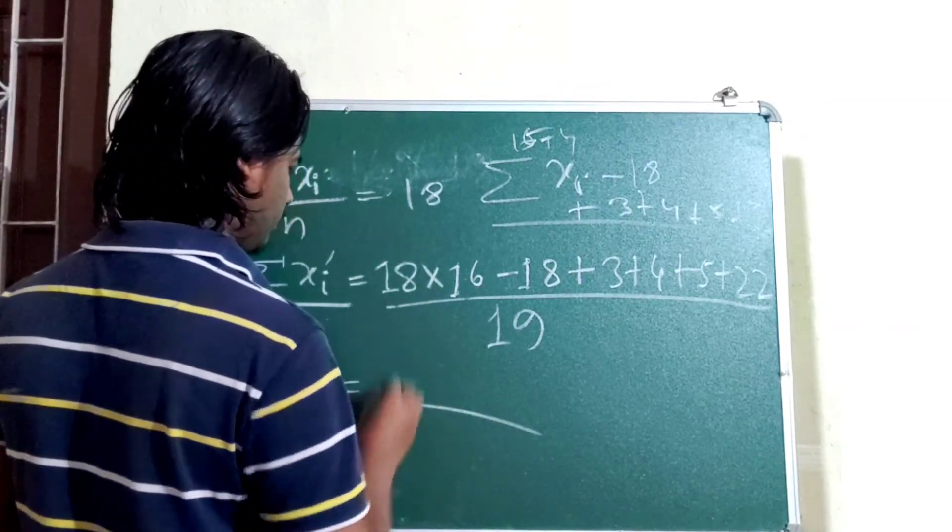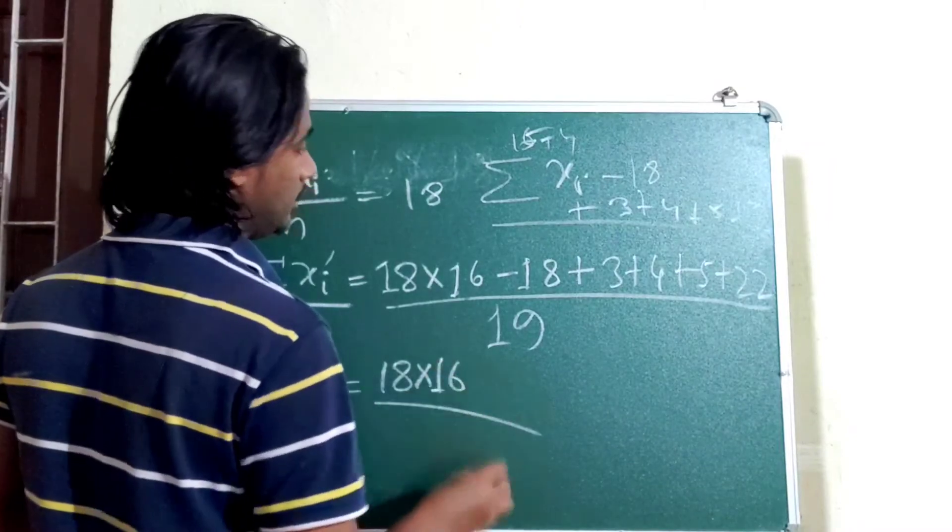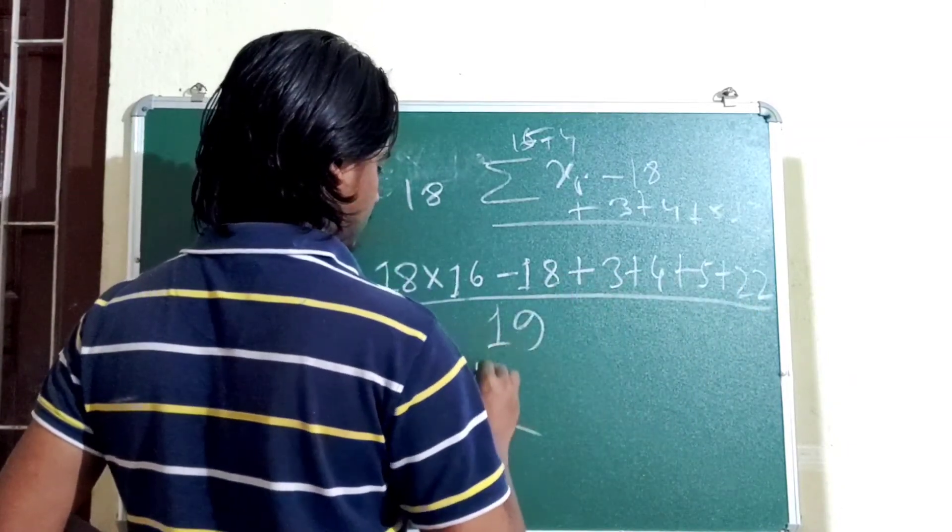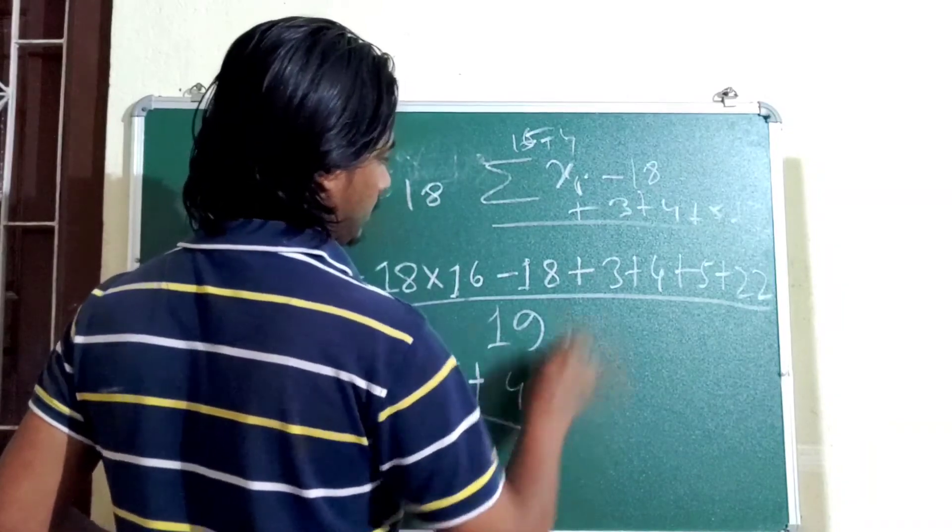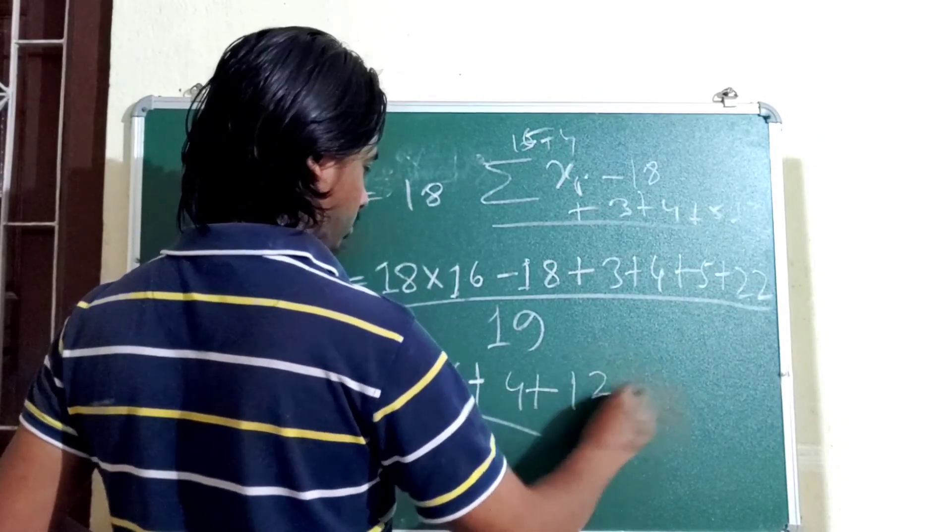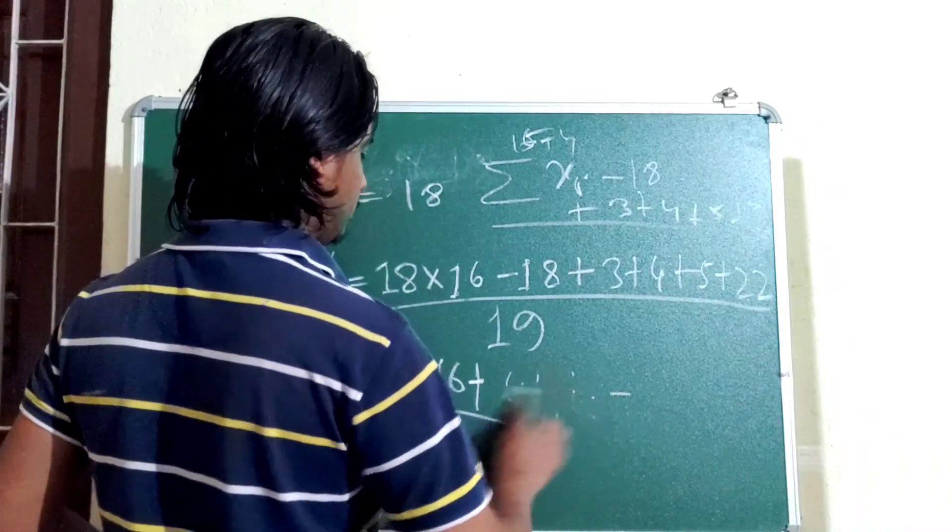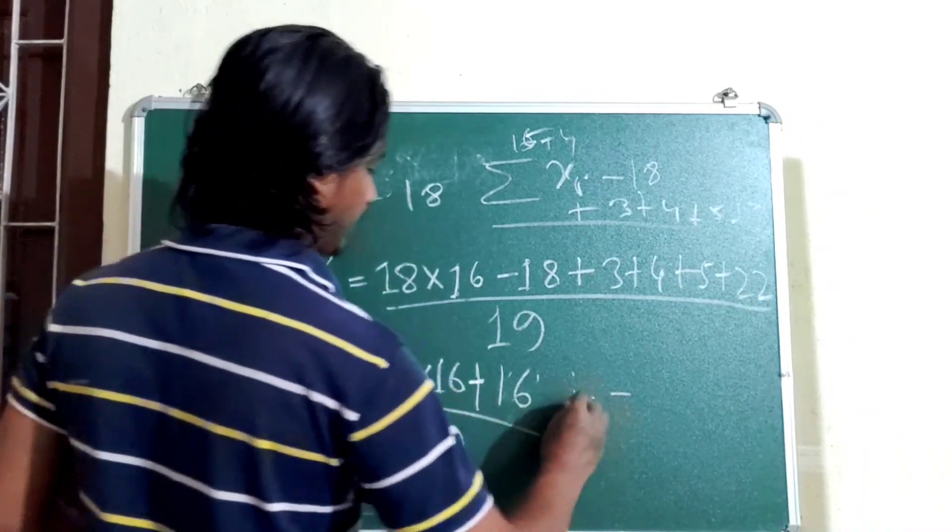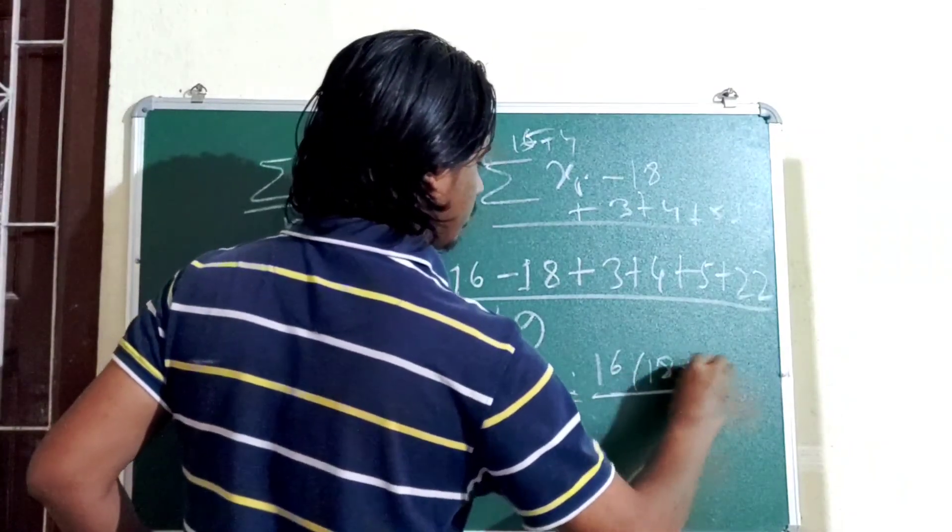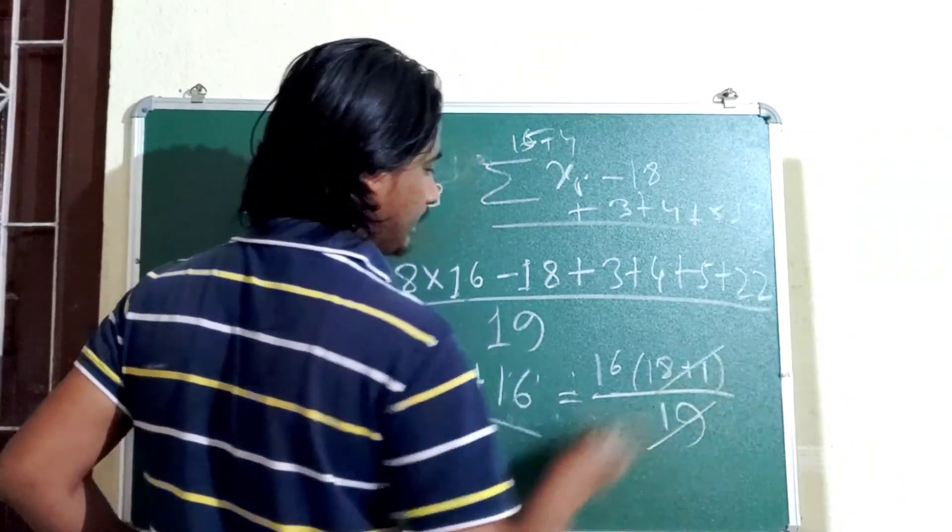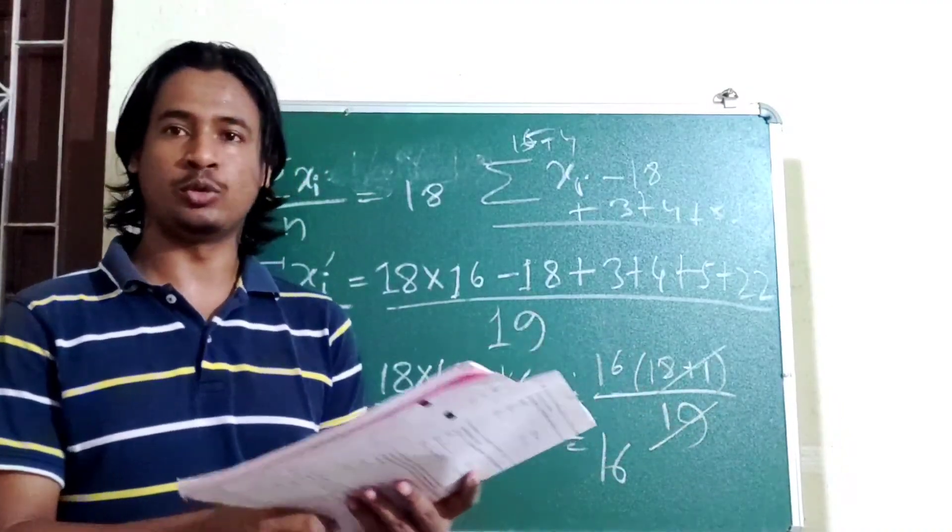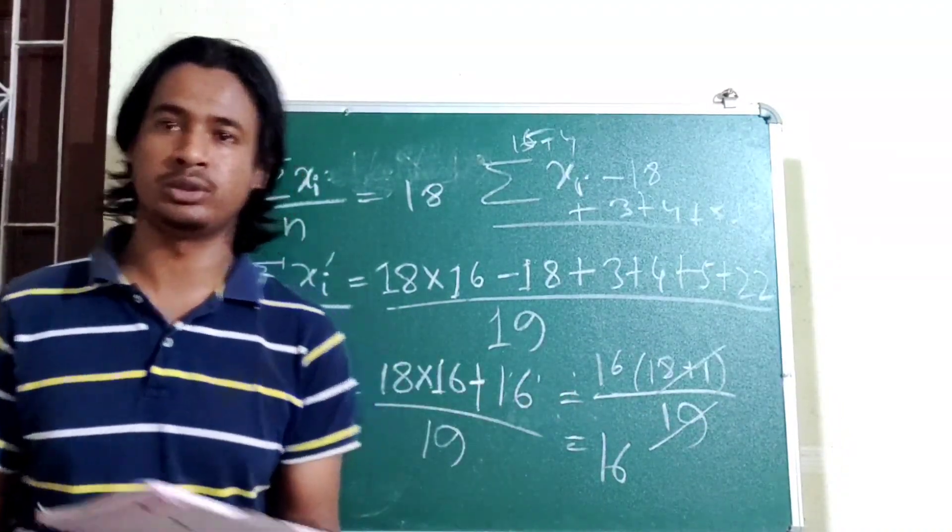So we have to add all: 18 into 16, then minus 18, which means 4 plus 4 is 8, plus 3 is 11, plus 5 is 16, plus 22. Wait, 3 plus 4 plus 5 plus 22 minus 18: that's 4 plus 4 is 8, plus 3 is 11, plus 5 is 16 divided by 19. So total mean is 16. So option C is the correct one. So this is the solution. Thanks.